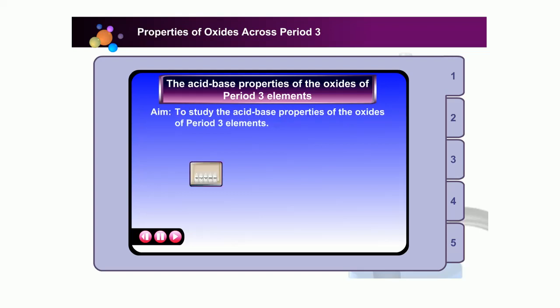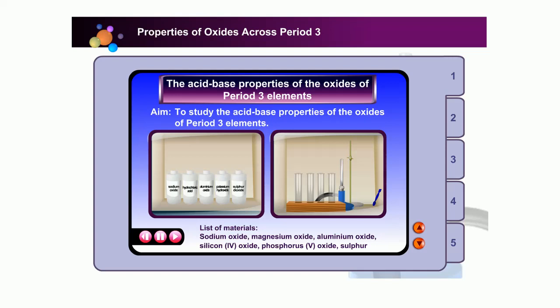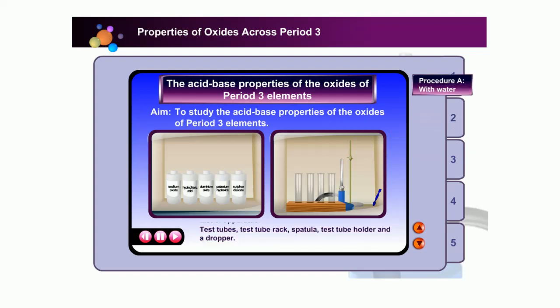If you are given a list of apparatus and materials, will you be able to carry out the investigation to study the acid-base properties of the oxides of period 3 elements? Can you identify the variables? Let's give it a try.